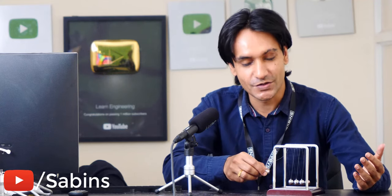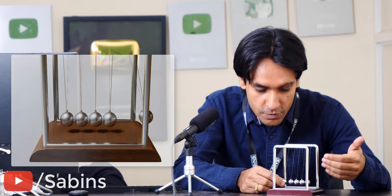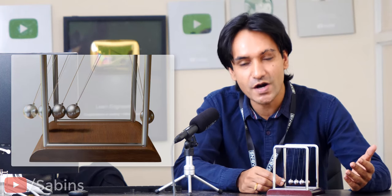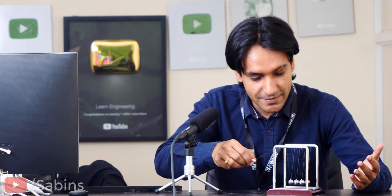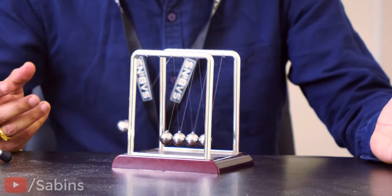If we release one ball from here, what will happen? The common sense of most of us tells that after the hitting, the remaining four balls may move forward with a lower speed. But what happens in reality is something else. Exactly one ball leaves on the other side and the process repeats.